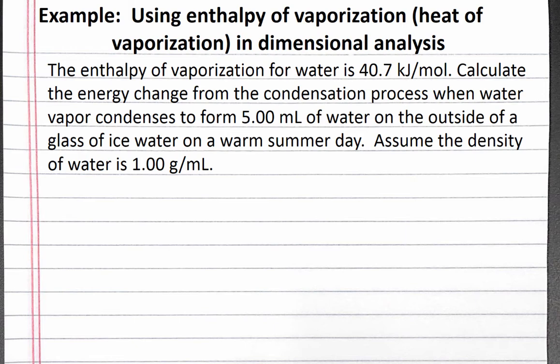Our problem reads, the enthalpy of vaporization for water is 40.7 kJ per mole. Calculate the energy change from the condensation process when water vapor condenses to form 5 milliliters of water on the outside of a glass of ice water on a warm summer day. Assume the density of water is 1 gram per milliliter.